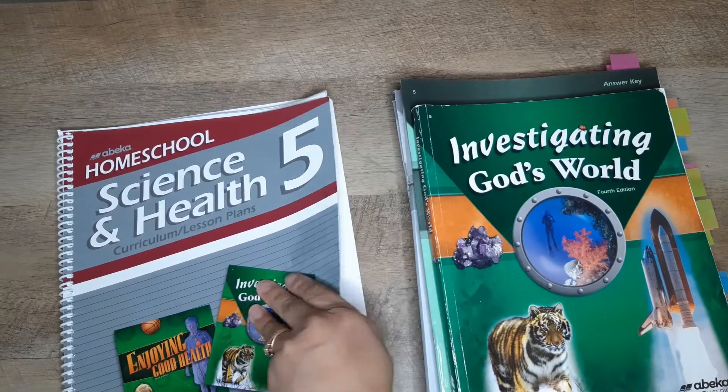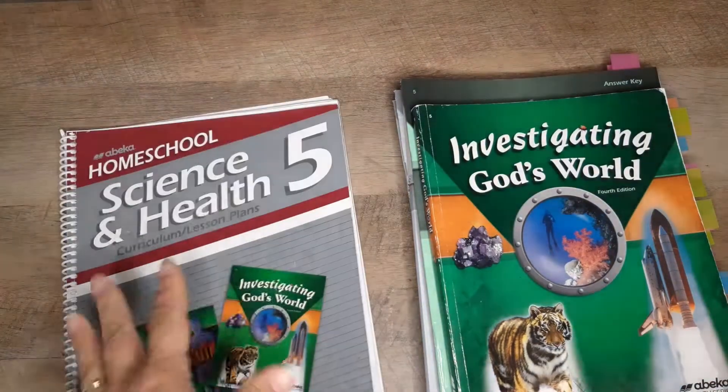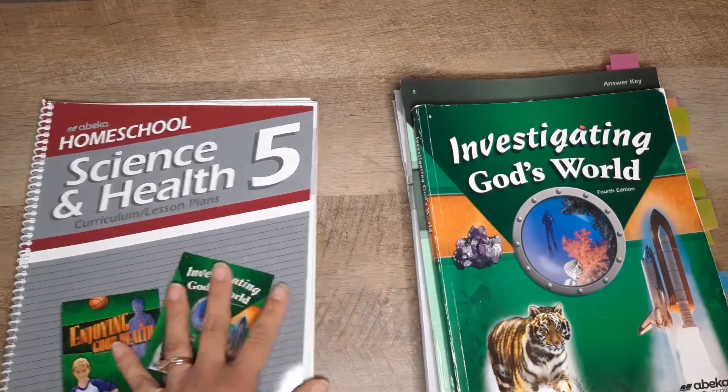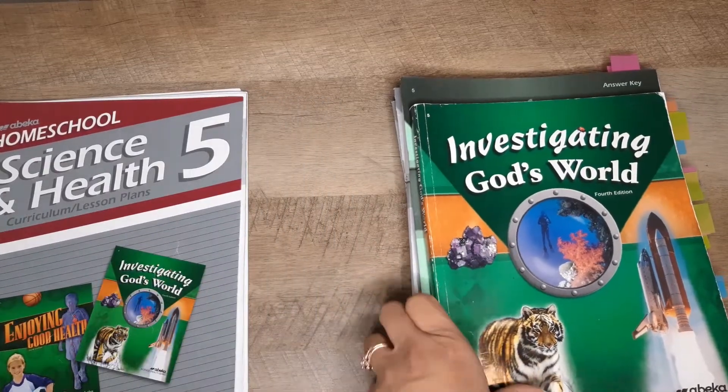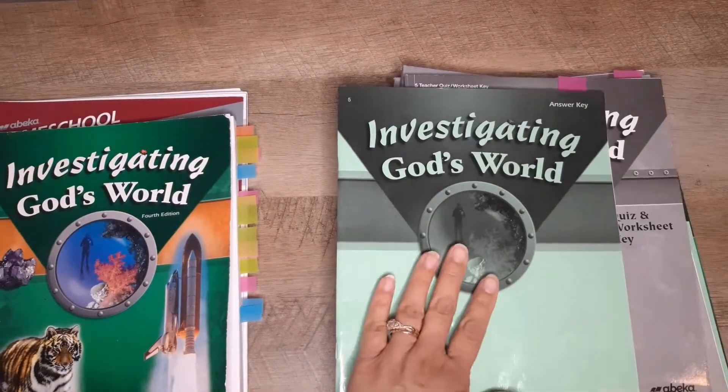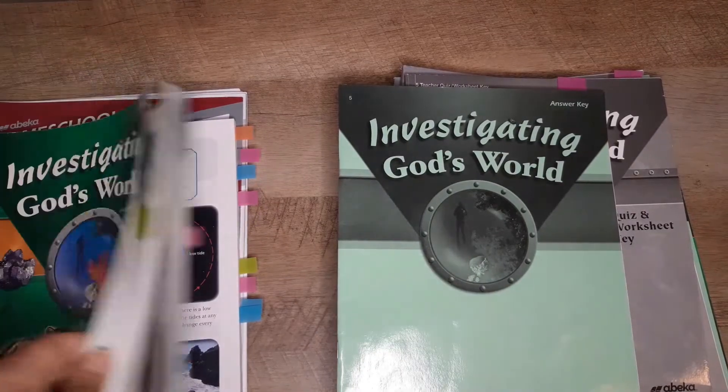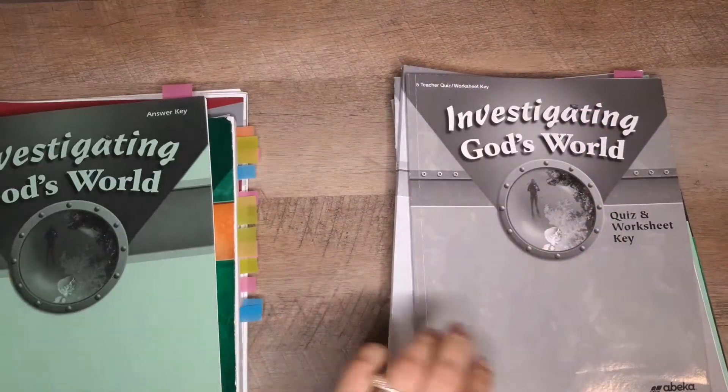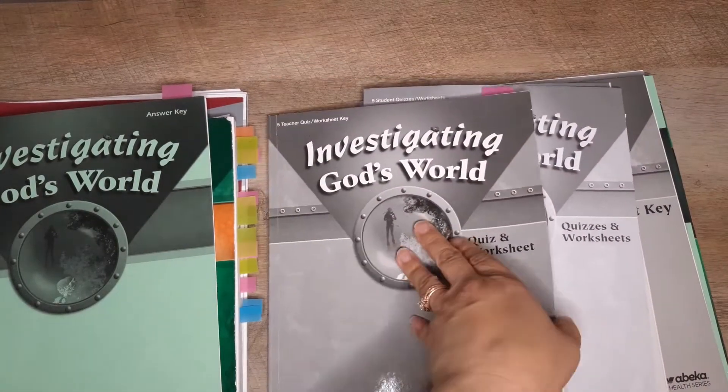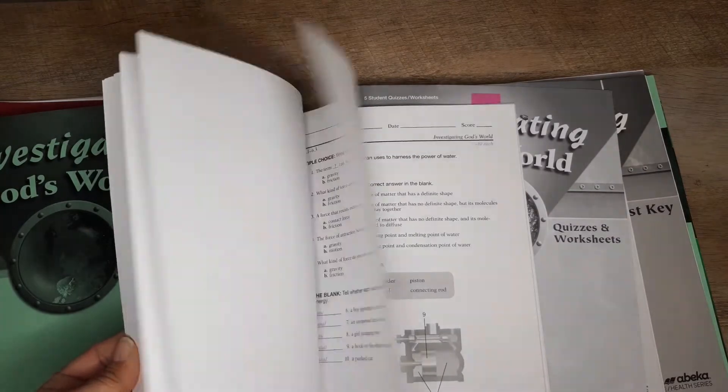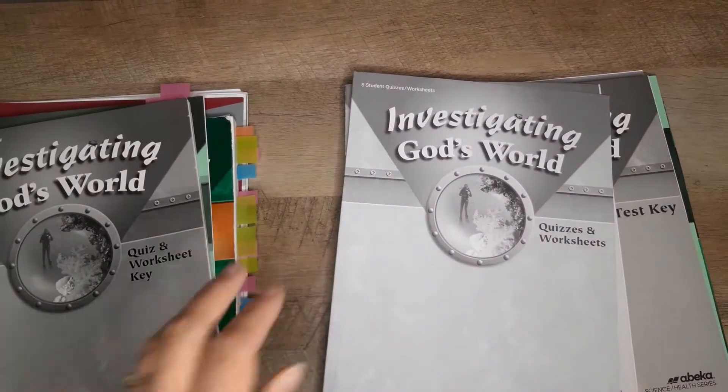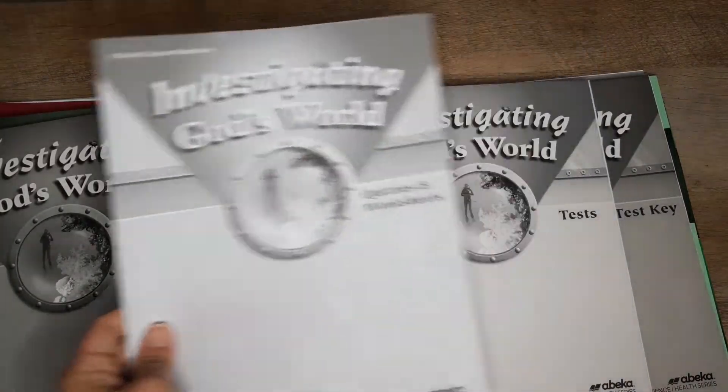This is science and health. The first three quarters of the school year is going to be science and then the last quarter is health. You get your student book. These will be your answers for all the questions that are in your child's science book. You also get a teacher quiz and worksheet key. Throughout the lesson plans will tell you when to use the worksheets and when you need to use your quizzes. These are the worksheets for the students.